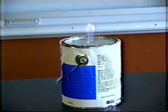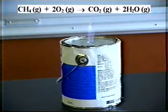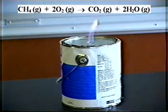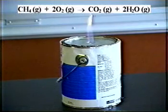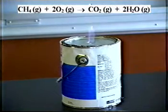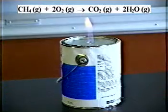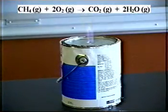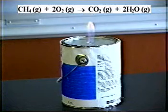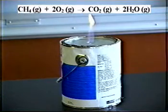Now we know the chemical reaction that's going on here. Methane plus oxygen makes carbon dioxide plus water. Here's the interesting part of this demonstration: because I'm not continually refilling the can with methane, the amount of methane in the can is decreasing. That's because the chemical reaction is using it up.